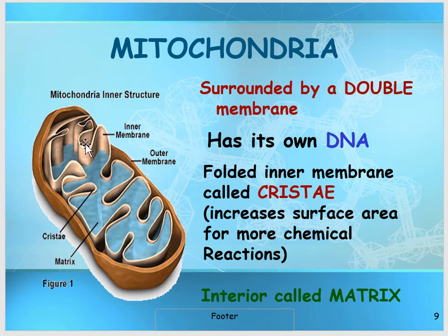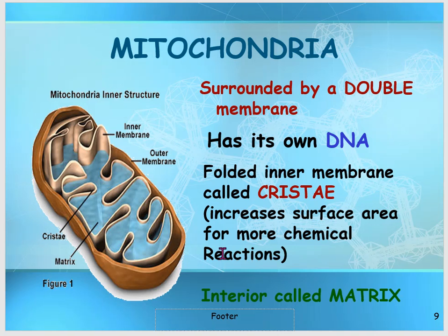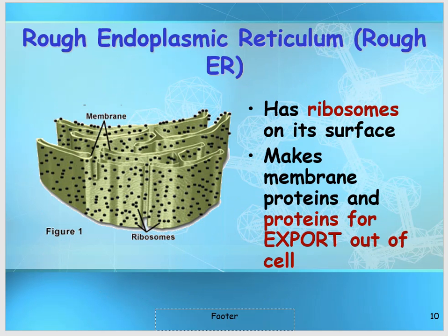The cristae help increase the surface area so the mitochondria can process more sugar. The process is called cellular respiration. The blue area inside is called the matrix, and it is filled with many catalytic enzymes that help break down glucose whenever it's needed.